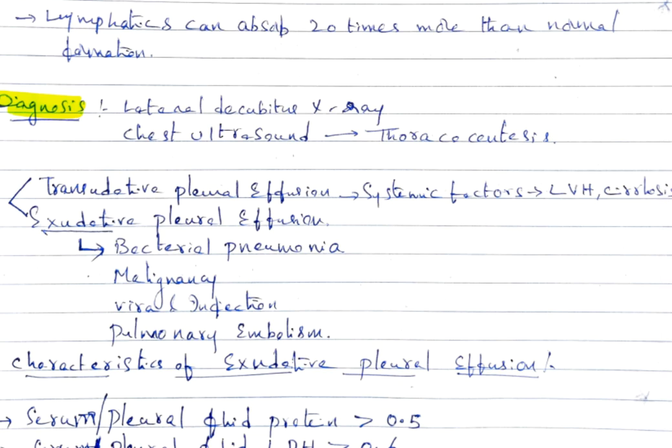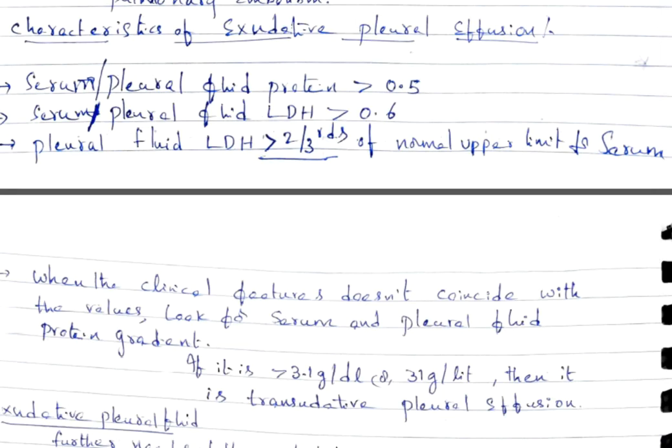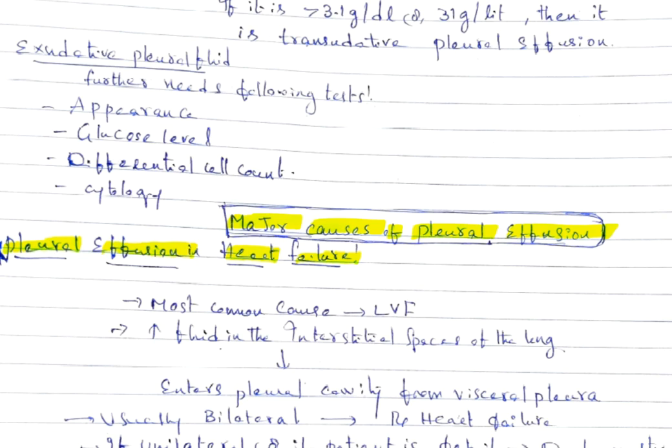Characteristics of exudative pleural effusion: serum or pleural fluid protein greater than 0.5, serum or pleural fluid LDH greater than 0.6, or pleural fluid LDH should be more than two-thirds of the normal upper limit of serum. When clinical features don't coincide with the values, look for serum and pleural fluid protein gradient. If it's more than 3.1 grams per deciliter or 31 grams per liter, it's transudative pleural effusion.